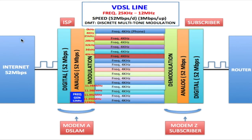I'm going to use this diagram here to explain exactly how the VDSL line actually works. This VDSL line runs on frequencies between 25 kilohertz and 12 megahertz. The speed is 52 megabits per second down and 3 megabits per second up — this is called an asynchronous type line. If it were synchronous, you would have 52 megabits per second both down and up.